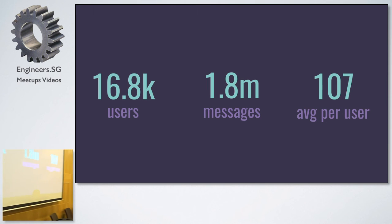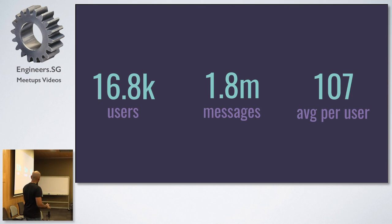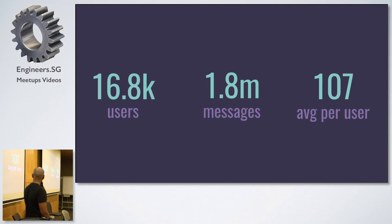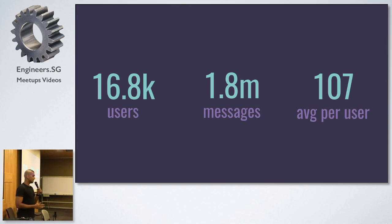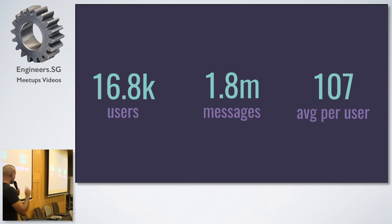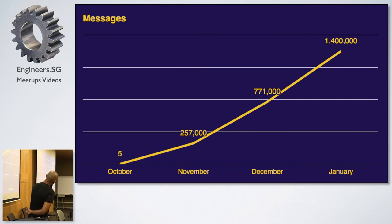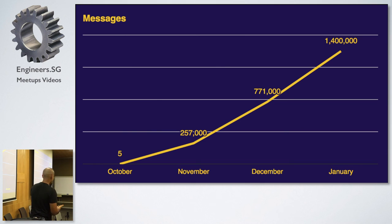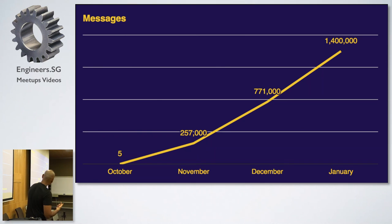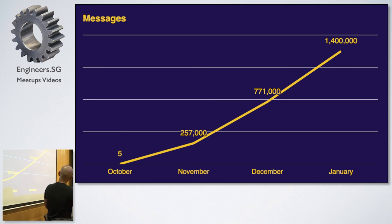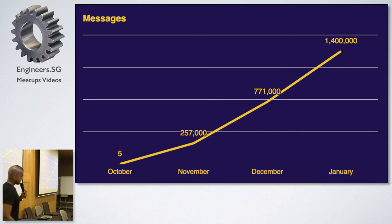Currently, the statistics: Bus Uncle has 16,800 unique users, and the page has almost 22,000 likes. So far it has processed about 1.8 million messages after being launched for about three and a half months, and the average number of messages per user is 107 — meaning users are really engaged, they just keep talking to Bus Uncle. When I released it in October, the first day it was 5 messages — probably me, my mother, and my friends. A month in, 215,700. Mid-January, about 1.4 million. It just kept going up.